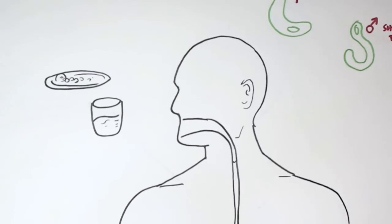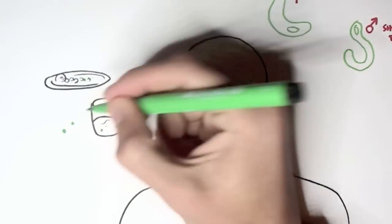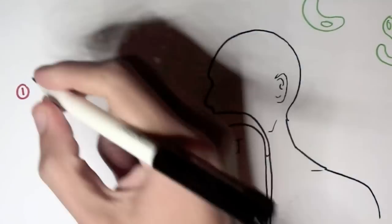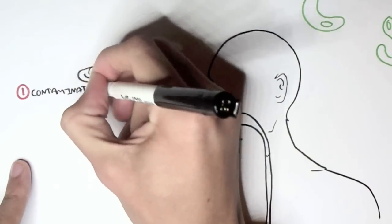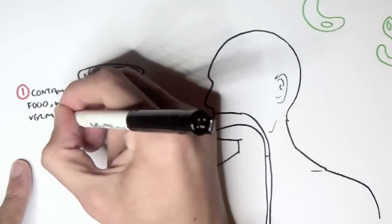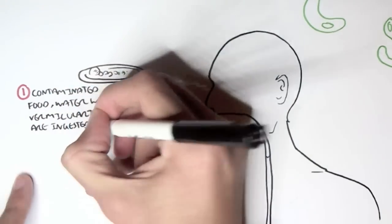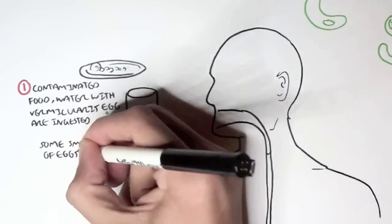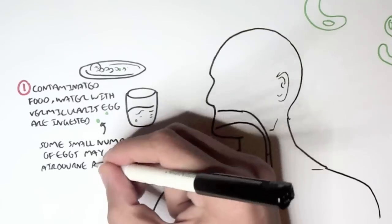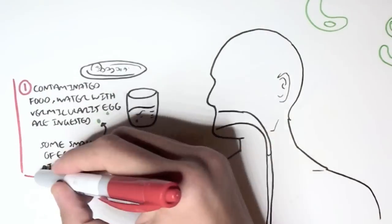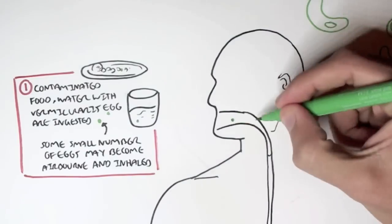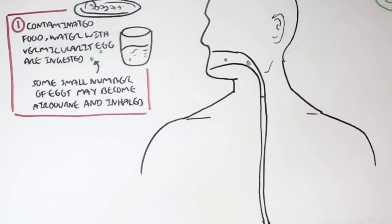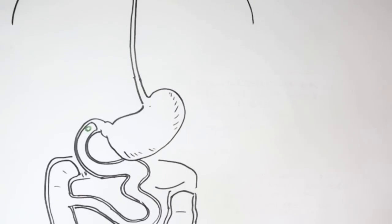The first thing that could happen is that contaminated food, water, with vermicularis eggs can be ingested by this human. A small number of eggs may also become airborne and inhaled. Because these eggs are so small, they can be inhaled and can itself cause a pinworm infection. So these eggs are inhaled or ingested into this human and the eggs go down through the gastrointestinal tract to the small intestine.